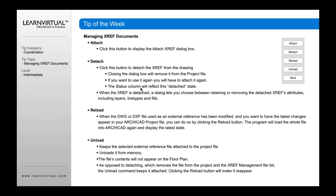The status column will reflect a detached state. When it's detached, the dialog lets you choose between retaining or removing the detached XReference attributes, including layers, line types, and fields. In most cases, if you're detaching that XReference and don't have other references that are part of the project, you probably want to remove the attributes — otherwise it's going to pollute information in the project that's not relevant to what you're doing.